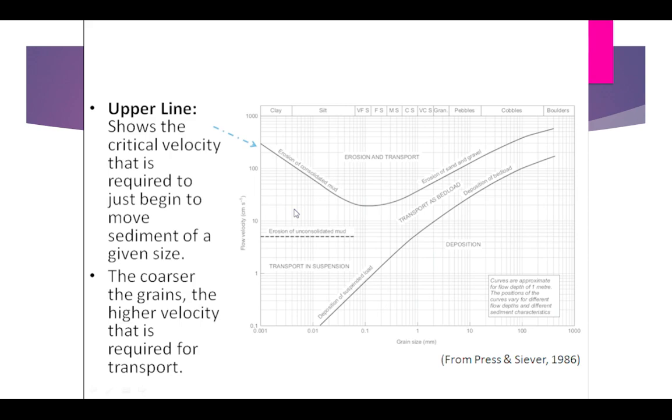One more thing: coarser the grain, higher the velocity required. For a boulder we need more flow velocity—literally around 800 to 900 centimeters per second—because the size is three to four hundred. For pebble, the velocity is less, around 200, and the size is relatively less, only 20.